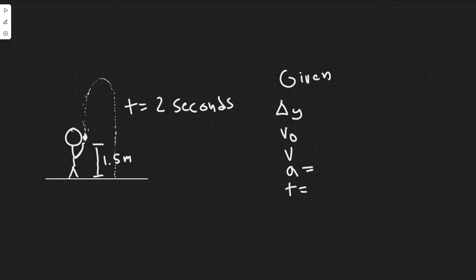So t is just time, a is acceleration, v is velocity, v sub zero is initial velocity, and delta y is your change.